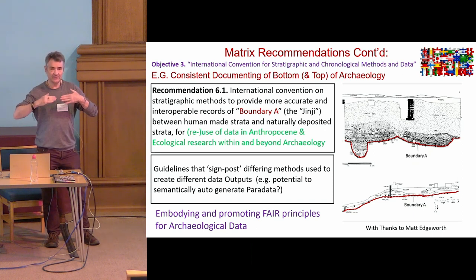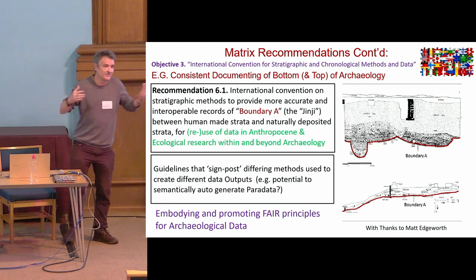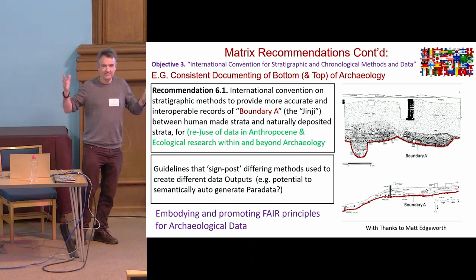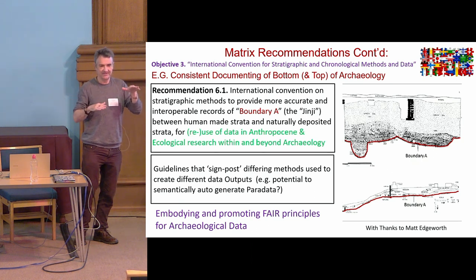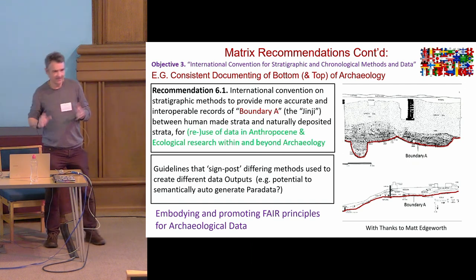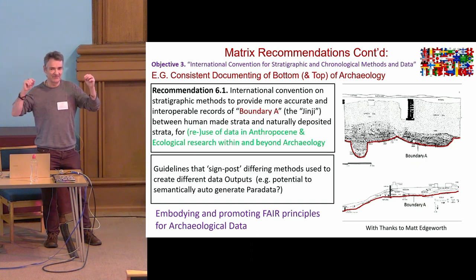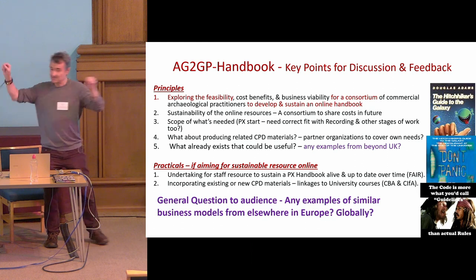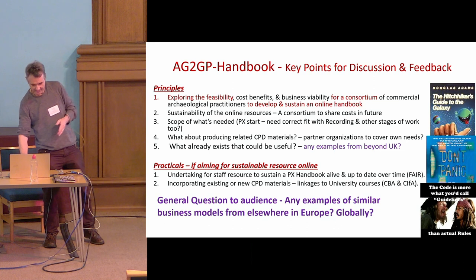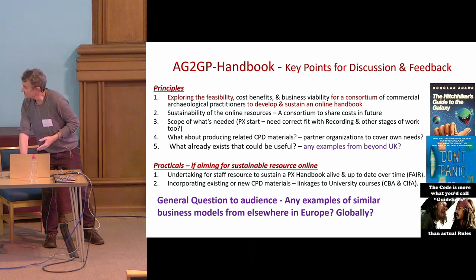Another area of inconsistency is something as simple as recording where excavation stopped. Museum of London uses 'NFE' (no further excavation), but even distinguishing whether they stopped because they reached natural deposits versus because the developer didn't need them to go deeper — and there was still material underneath — isn't consistently recorded. Having that consistently recorded would allow us to draw that boundary between the anthropogenic layers and what lies below.